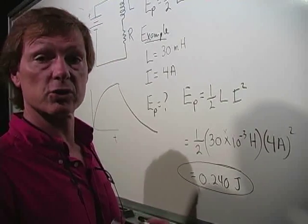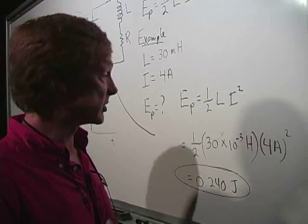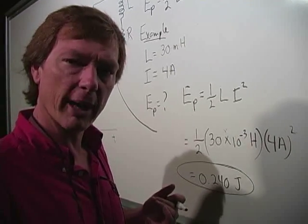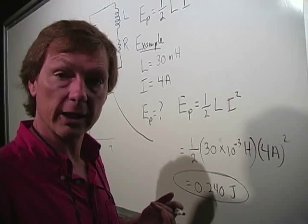So that's going to be equal to 0.240 henries times amps squared gives you joules. So 0.240 joules, about a quarter of a joule. So that's inductance. We've talked about capacitance.